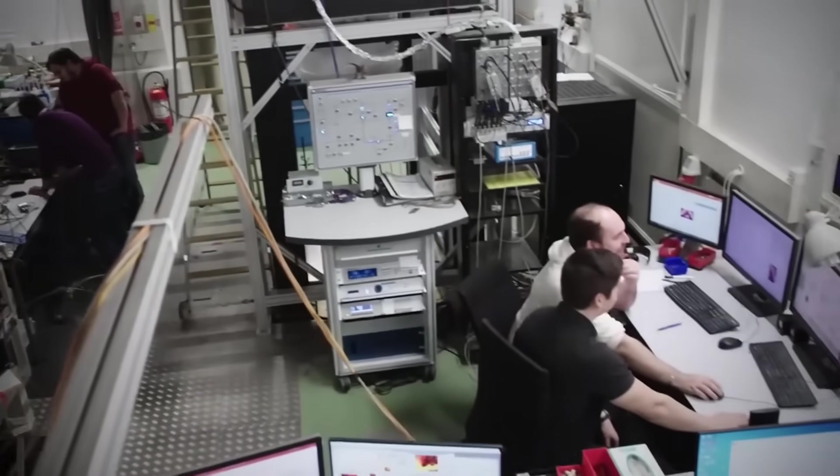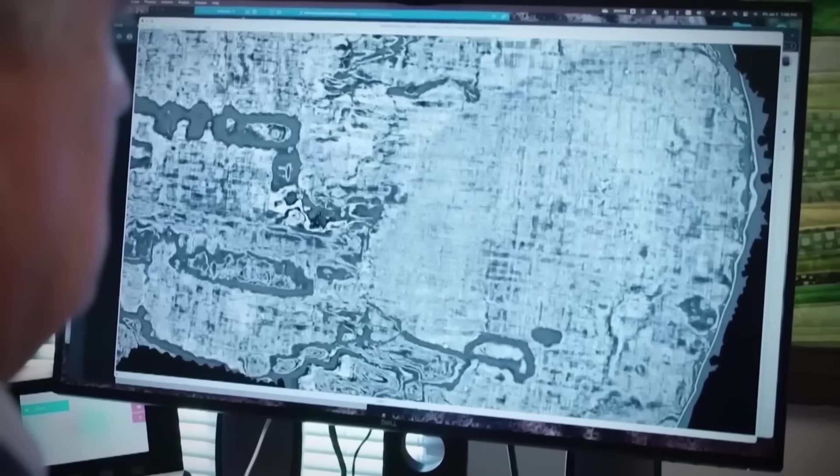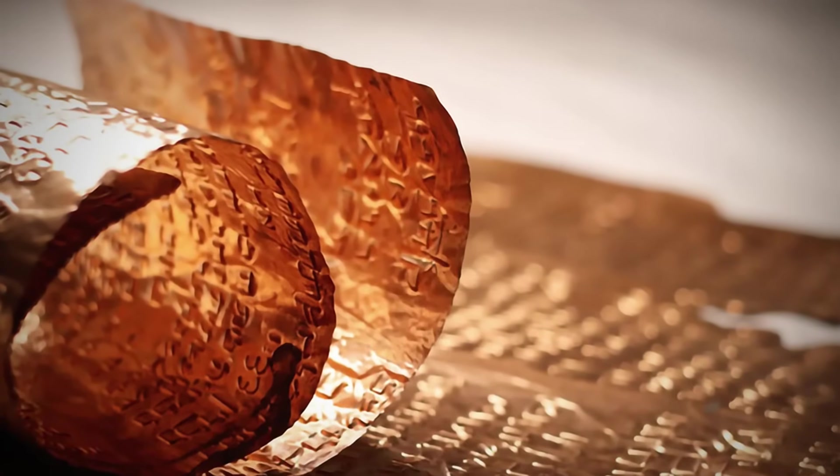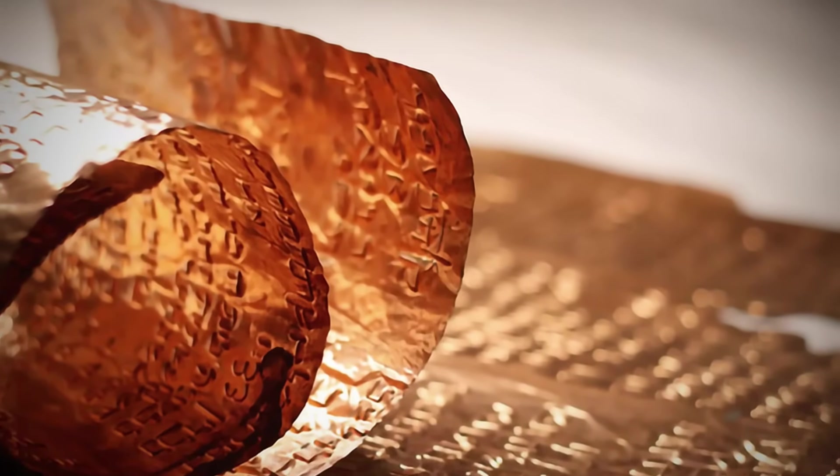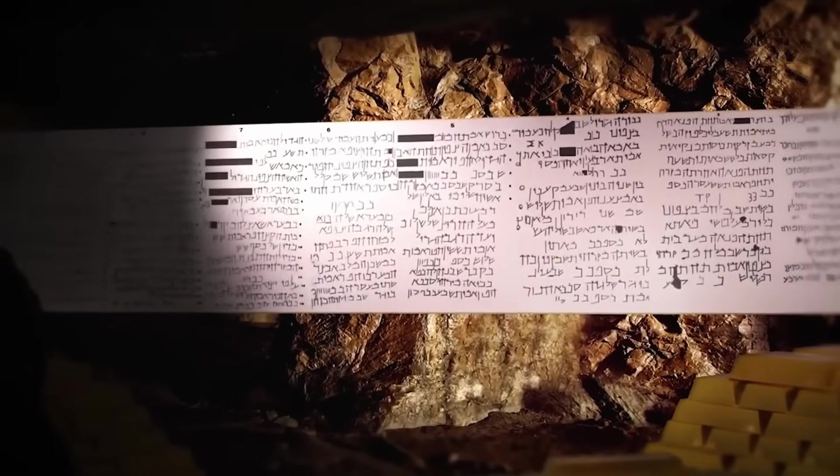What's truly fascinating is how the scroll's metallic medium preserved this information for two millennia. Could the ancients have specifically chosen copper because they knew it would outlast parchment? The implications are staggering. But before we jump to conclusions, let's examine what experts think this mysterious vessel of radiance might actually be.